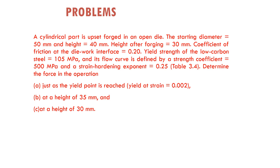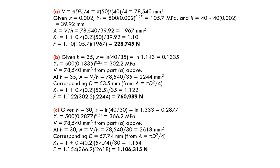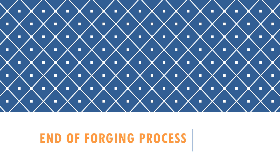Here is another question you can try on your own. The yield point is given with strain = 0.002, initial height = 35 and final height = 30. The solution follows the same method: calculate volume, then cross-sectional area, then kf, and finally compute the force F. Everything follows the same equation steps. If you have any problems understanding, feel free to contact me. That's the end of the forging process lecture — we'll look at the next process in the next class. Thank you for listening. Assalamualaikum.